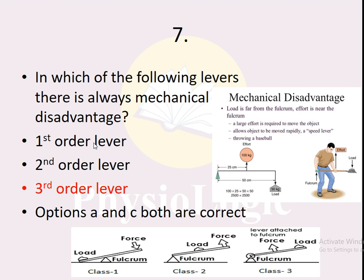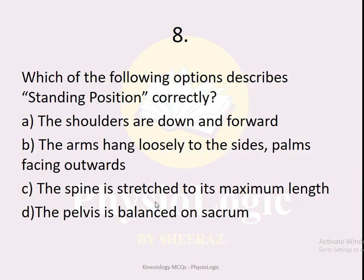In a class 3 lever, the effort is in the center. The effort arm — the distance from force to the fulcrum — is always less than the weight arm. If the effort arm equals the weight arm, there is no mechanical advantage or disadvantage. If the effort arm is greater, there is mechanical advantage. If the load arm is greater than the effort arm, there is mechanical disadvantage. In the third-order lever, the load arm always exceeds the effort arm, so there is always mechanical disadvantage.